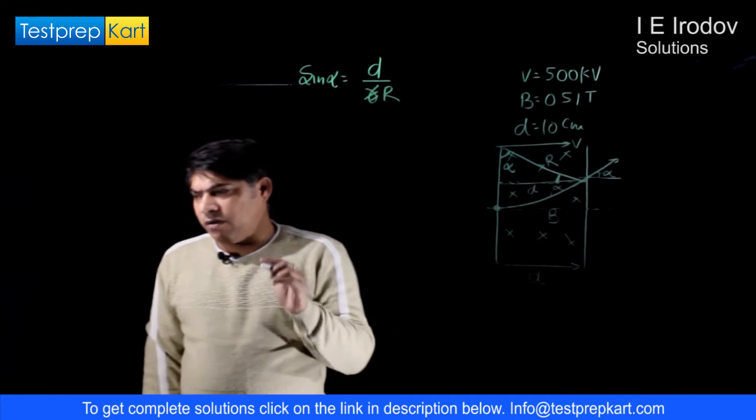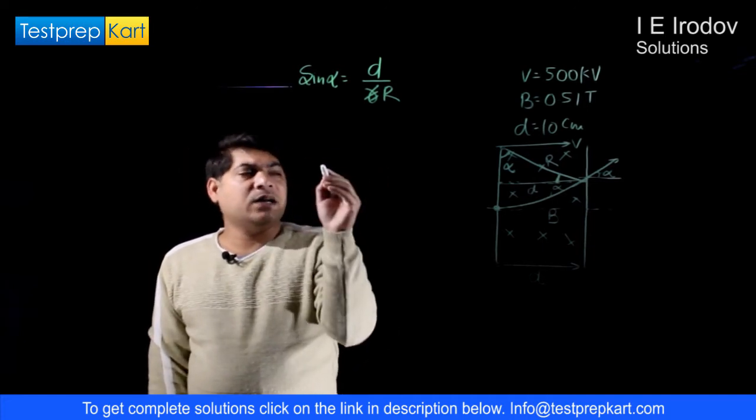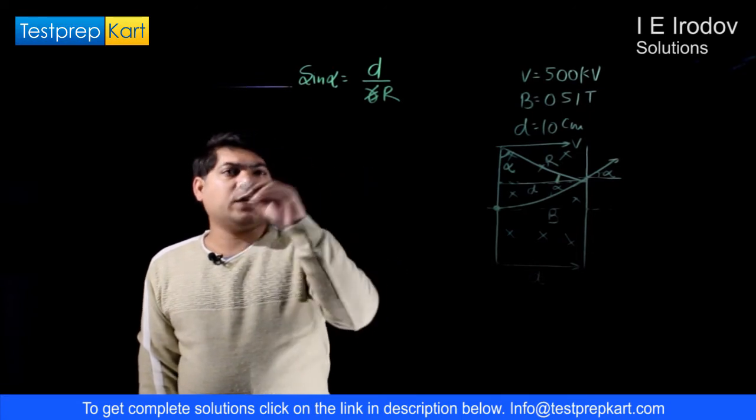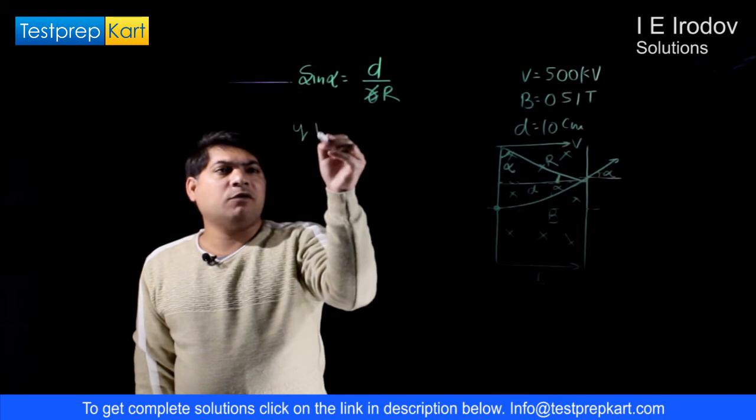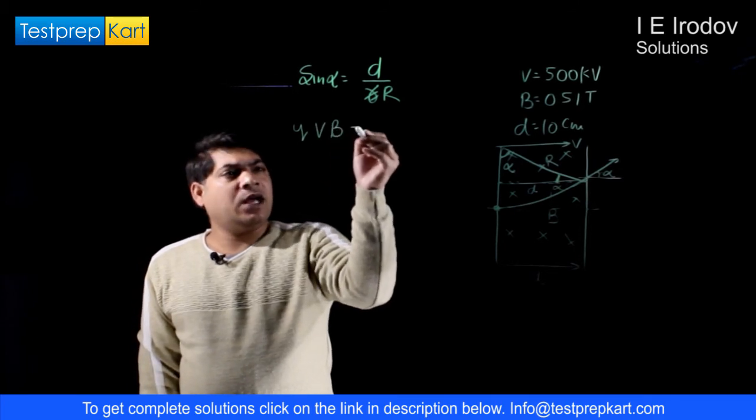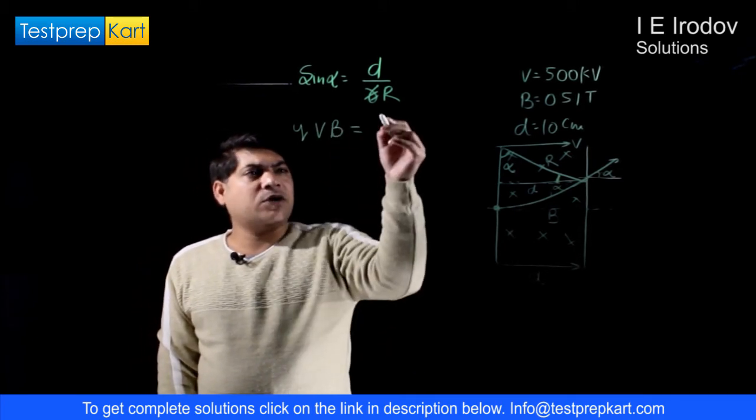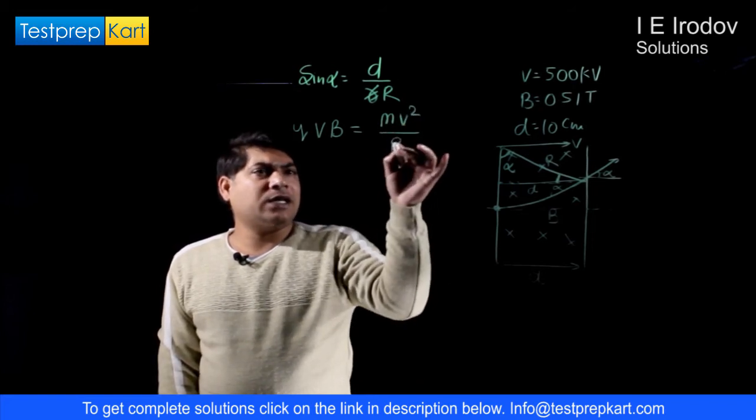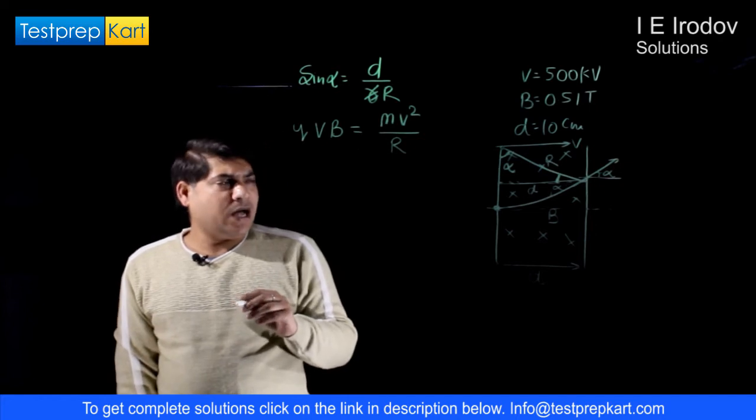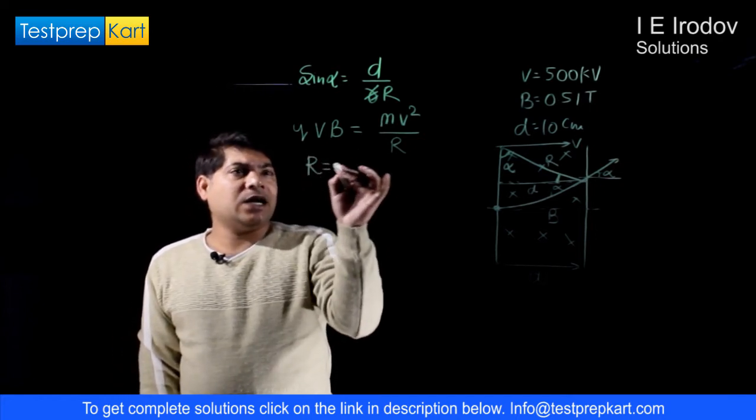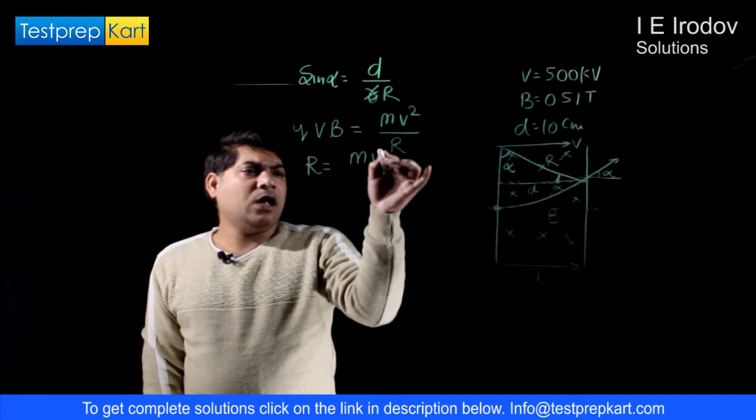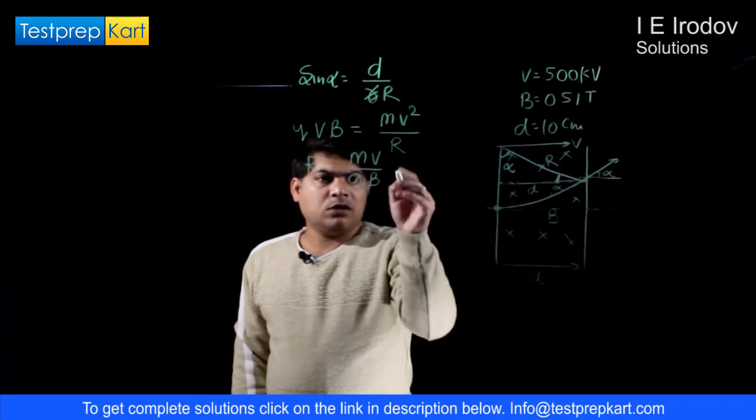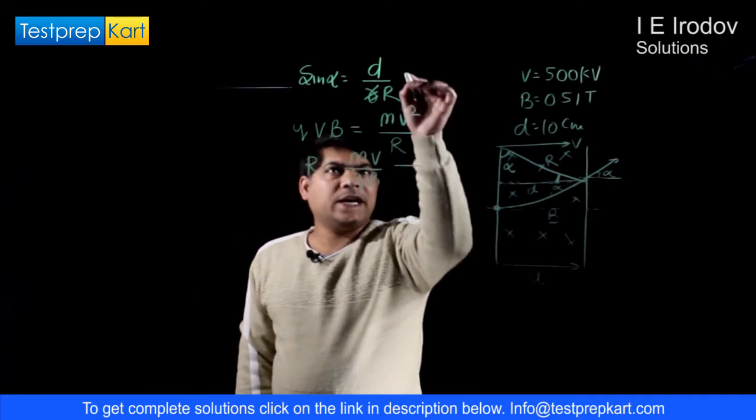Now we already know that whenever a particle moves in a transverse magnetic field, then it will experience a Lorentz force QVB and start performing circular motion. So it will also follow the law of circular motion, that is MV squared over R. So from here we can say that R is equal to MV over QB. This is our second equation.